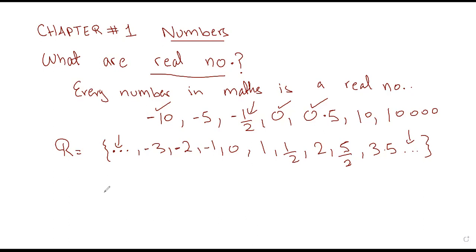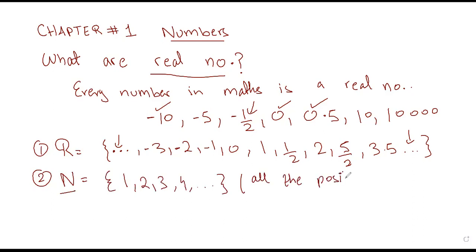Real numbers contains all numbers — positive, negative, decimal, fraction, zero — every number. But in maths we classify things into specific sets. Let's talk about the second set, that is natural numbers. Natural numbers start off with one, then two, three, four, and so on. In natural numbers we have all the positive whole numbers.